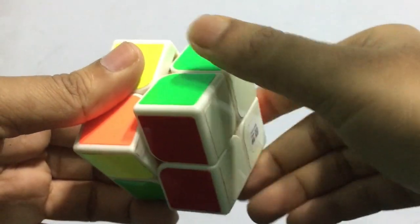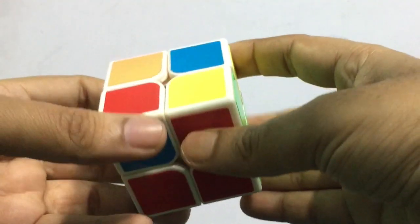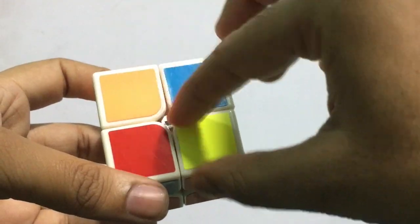Now this is the first part of the Rubik's Cube. In the second part, what we have to do is complete this top layer.